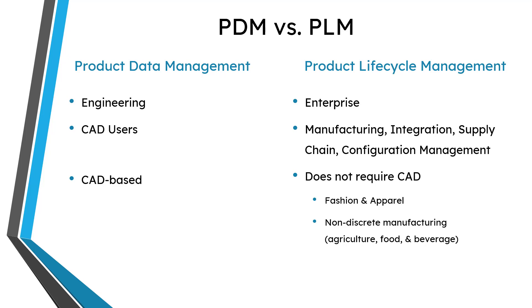To explain non-discrete manufacturing, let's talk about discrete manufacturing first. Discrete manufacturing is when you sell individual objects — for example, a refrigerator, a washing machine, a car, a computer, or an airplane — those are discrete objects. But with non-discrete manufacturing, you're making things like agriculture — maybe corn or wheat — other food products and beverages like beer or alcohol. Those things are sold in volumes and not in discrete units.